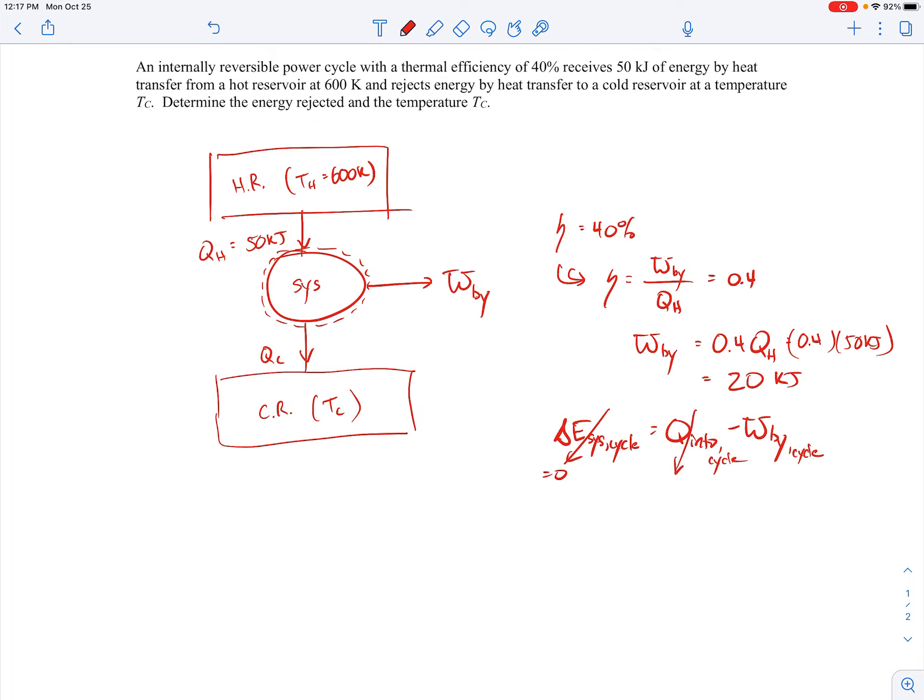The Q into the cycle, this will be QH minus QC, because QH is coming in here, QC is going out, so that's why we have a minus QC there. And so the QC will be QH minus W by, QH was 50 KJ. We just calculated the W by was 20 KJ, so the QC should be 30 KJ.